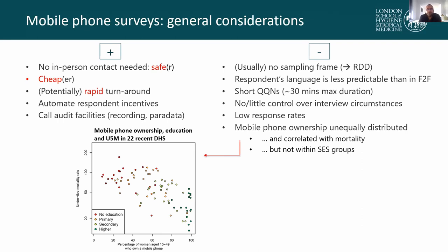Mobile phone surveys also have a number of important disadvantages. One is that we have to resort to random digit dialing because oftentimes there is no satisfying sampling frame available, and random digit dialing can be quite resource intensive. Further, the respondent's language in a mobile phone survey can be much less predictable than in a face-to-face setting, because you dial a number randomly anywhere in the country, and some countries have several frequently spoken languages.